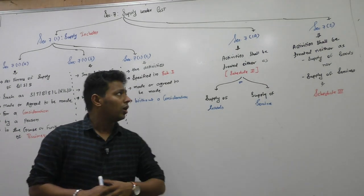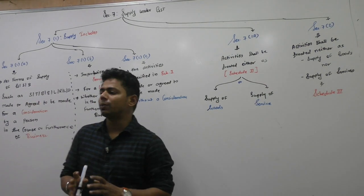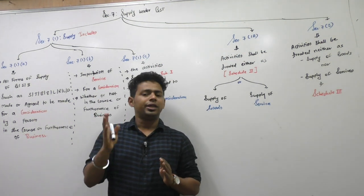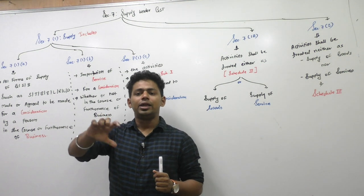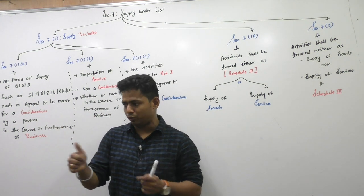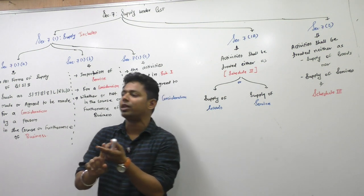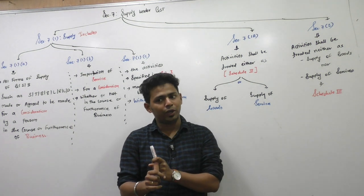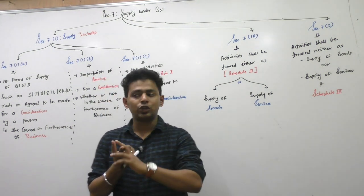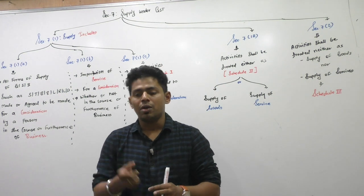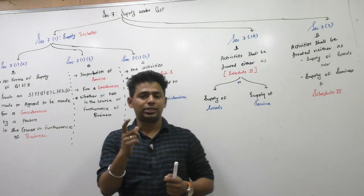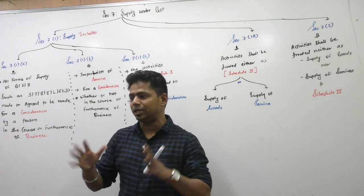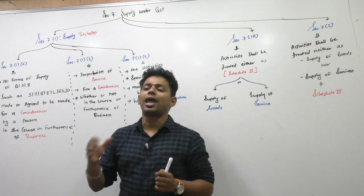We are in Section 7 now. Section 7 talks about supply. In the charging section, most words we have understood. In Section 9, the word was 'all intrastate supply of goods and services or both.' We are done with the definition of goods and the definition of service. Supply is the trigger point — if supply happens, then only GST is levyable, otherwise it is not. So we call it the taxable event.